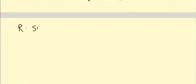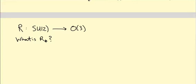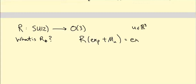Now I have a map R taking an element of SU(2) and producing an orthogonal transformation in O(3) — it will turn out to be in SO(3). I want to understand R*, the corresponding map on Lie algebras. We know R(exp(t·M_u)) = exp(t·R*(M_u)), so to get R*(M_u) we differentiate with respect to t and set t = 0.